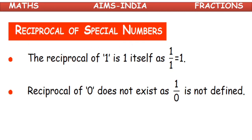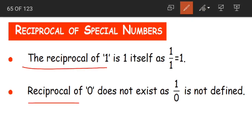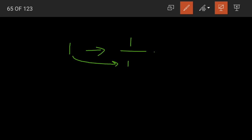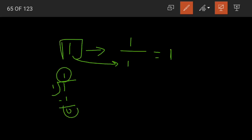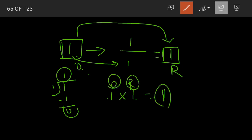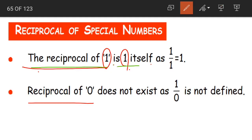Now, reciprocal of special numbers. The first special number is 1. The reciprocal of 1 is 1 itself: 1 divided by 1 equals 1. So 1 is our special number whose reciprocal is also 1. You can verify: 1 into 1 equals 1 — even when multiplying the reciprocal with original, the answer is 1. The reciprocal of 1 is always 1.